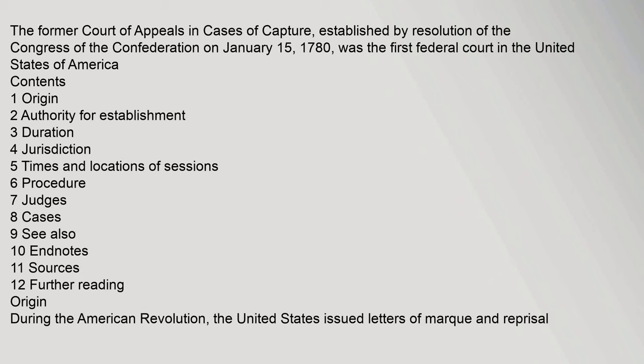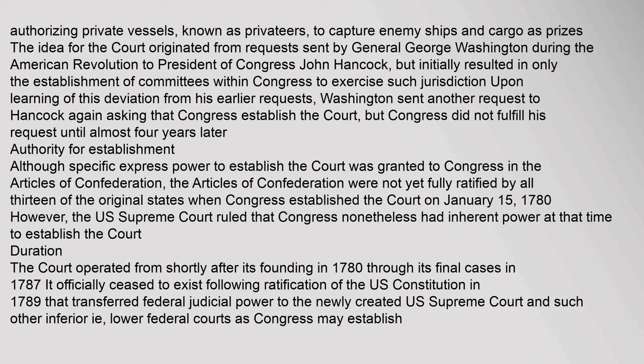Origin. During the American Revolution, the United States issued letters of marque and reprisal authorizing private vessels, known as privateers, to capture enemy ships and cargo as prizes. The idea for the court originated from requests sent by General George Washington to President of Congress John Hancock, but initially resulted in only the establishment of committees within Congress. Upon learning of this deviation from his earlier requests, Washington sent another request to Hancock asking that Congress establish the court.